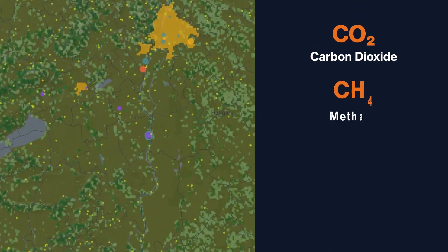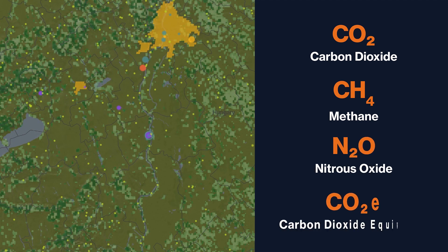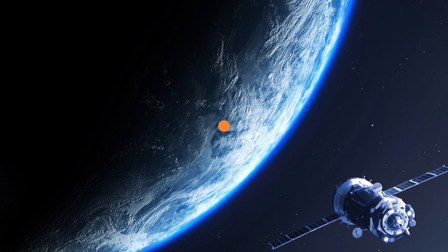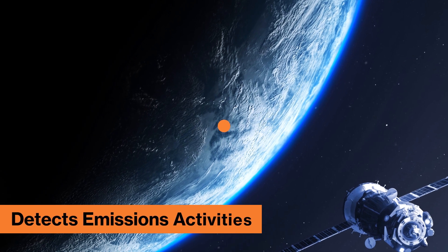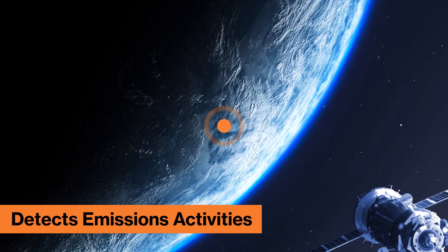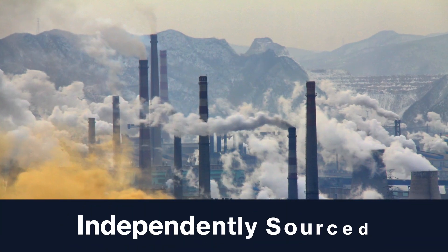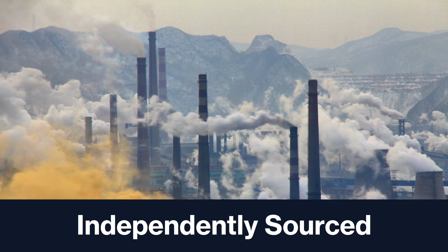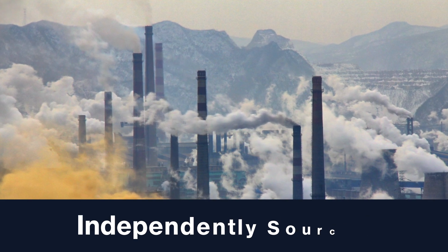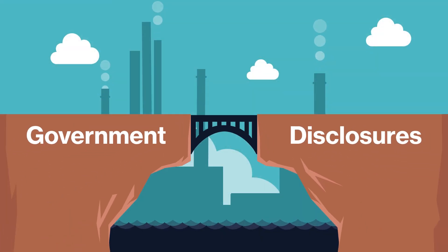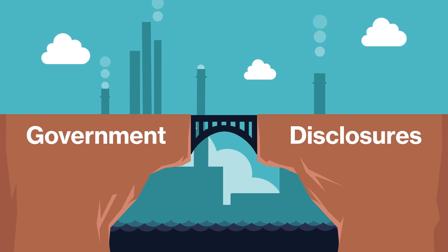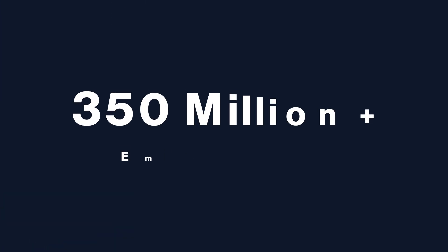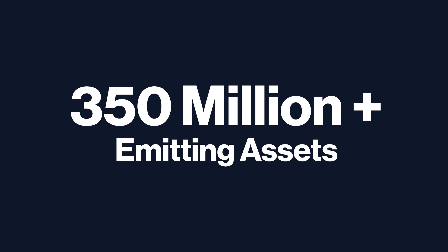With data on carbon dioxide, methane, nitrous oxide, and CO2 equivalent, Climate Trace detects emissions activities from every major economic sector and every country. Nearly all the data is independently sourced rather than relying on self-reported data, so you can verify and fill gaps in your government's disclosures. Data on more than 350 million emitting assets are available on the free platform.